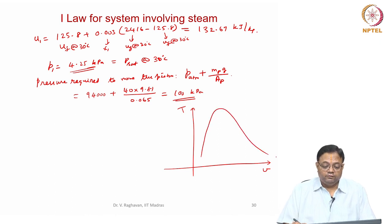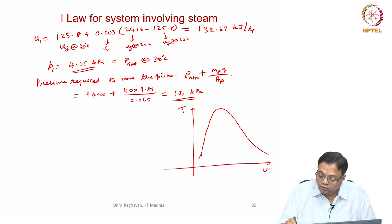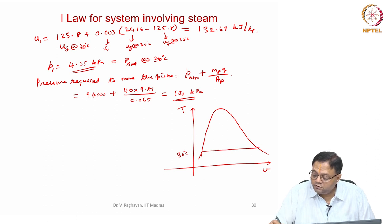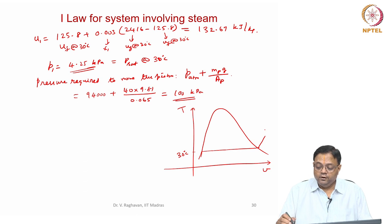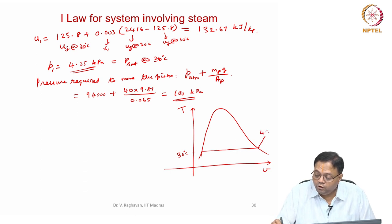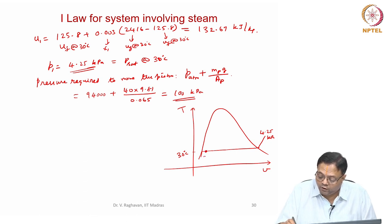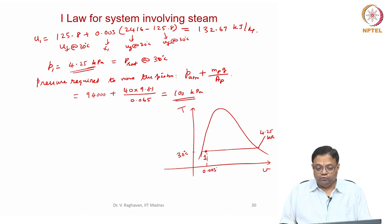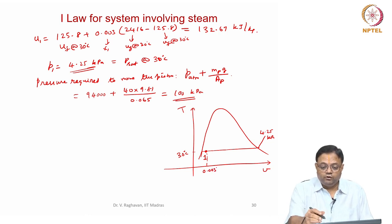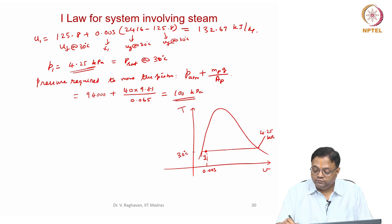On the P-V diagram, the 30°C line corresponds to a saturation pressure of 4.25 kPa. State 1 is in the saturated region with quality 0.003. A constant volume process occurs from state 1 until the piston just lifts at state 2.